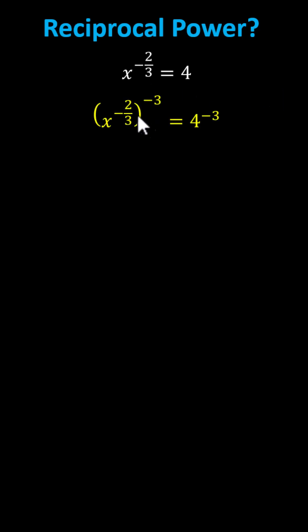On the left, we multiply the exponents. Negative two-thirds times negative three equals positive two, giving us x squared equals four to the power of negative three.